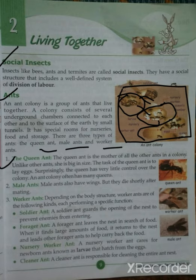The queen ant's only job is to lay eggs. If she loses control over the colony, many new queens can emerge. The second type is male ants. Male ants also have wings, but they die shortly after mating. Their only work is to help the queen ant in laying eggs.